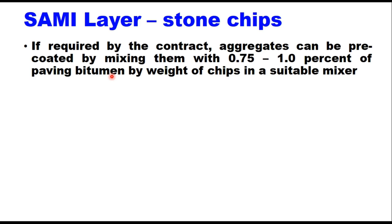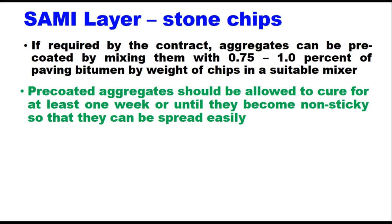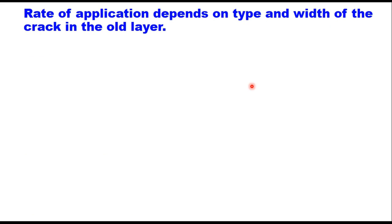If required by the contract, aggregates can be pre-coated by mixing them with 0.75 to 1% of paving bitumen by weight of chips in a suitable mixer. These pre-coated aggregates should be allowed to cure for at least one week, or until they become non-sticky, so that they can be spread easily.